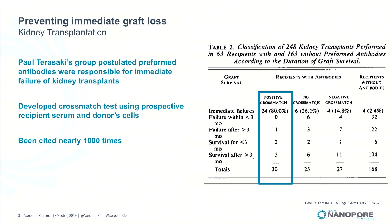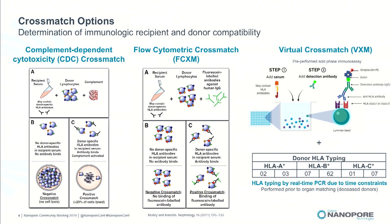I want to talk about transplantation — kidney transplants are obviously the dominant transplant in the United States. What I'm showing here is data from a 1969 New England Journal article from Paul Terasaki's group showing the value of cross matching, where you take recipient serum, take donor cells, mix the two together and see if there's a reaction. The data showed that a positive cross match is indicative of a worse outcome, and this became the basis of pre-transplant testing for kidney patients in the United States — every patient who gets a kidney transplant has a cross match done prior to receiving that organ.